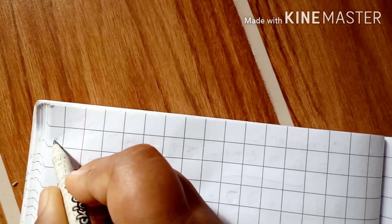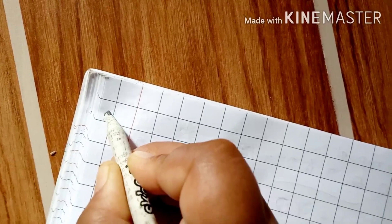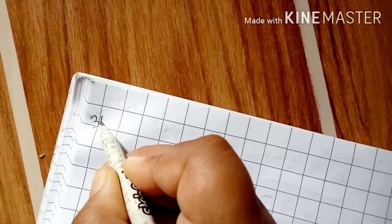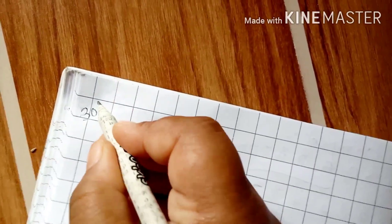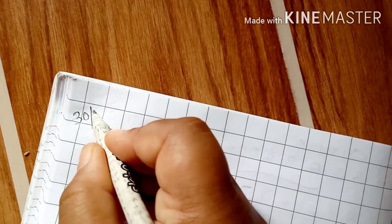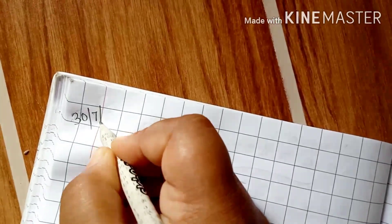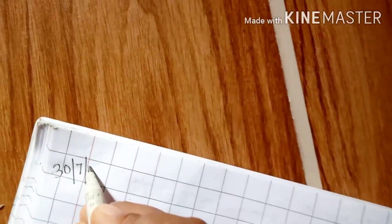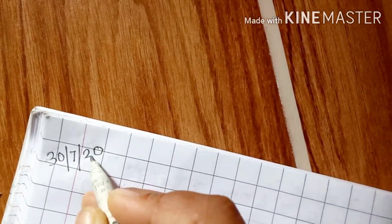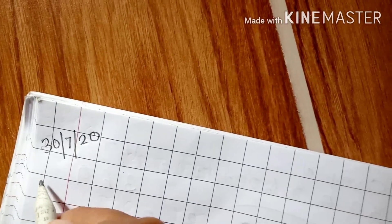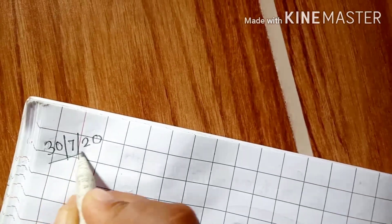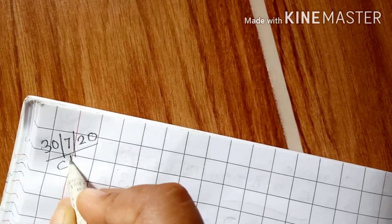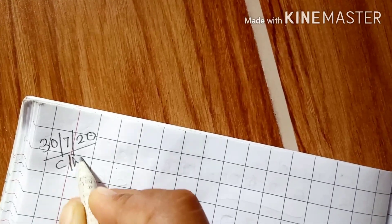First, you will write today's date, that is, 30/7/2020. So, you can write here, 20 also. Then, we will write CW, which means classwork.